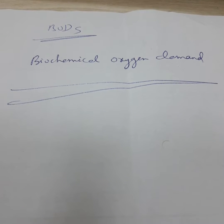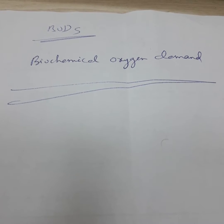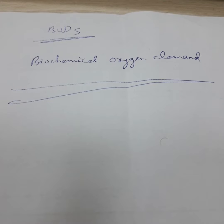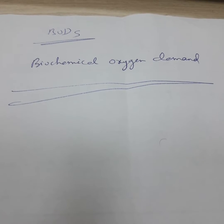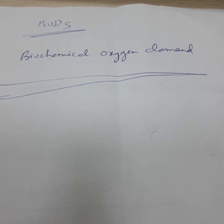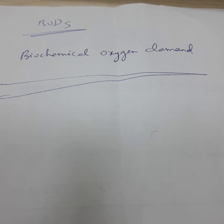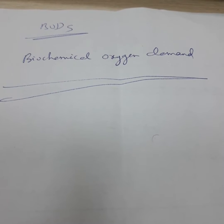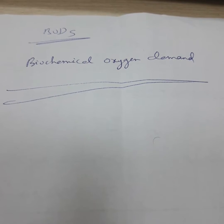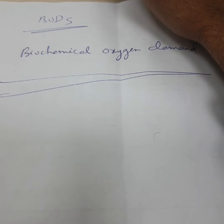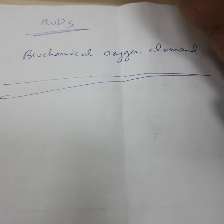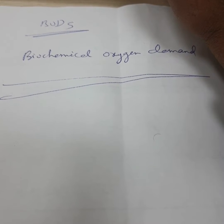BOD is part of the assessment of the quality of surface water and it enables us to understand the characteristics of dissolved oxygen in water and wastewater. Here we are going to use the device called OxyTop. The objective is to understand the meaning of BOD as a wastewater quality parameter and to use the OxyTop BOD measuring system. BOD is an indicator of the potential for a water body to become depleted in oxygen and possibly become anaerobic because of biodegradation.